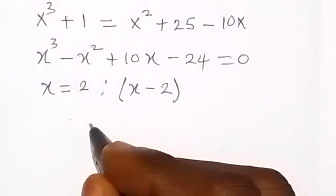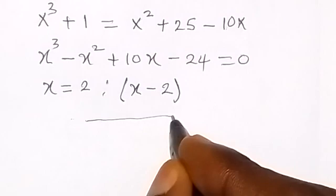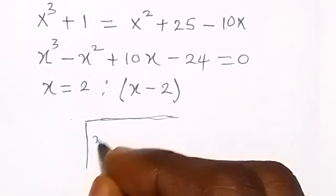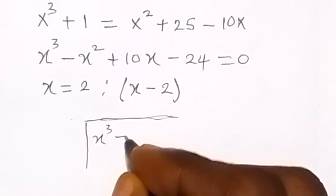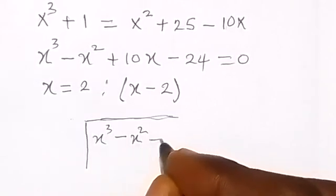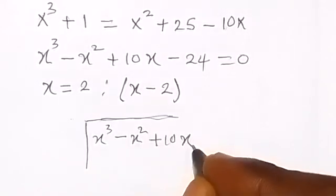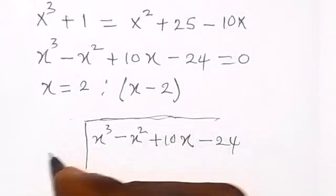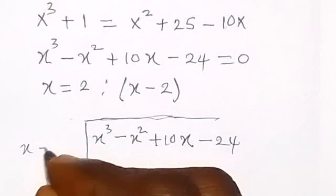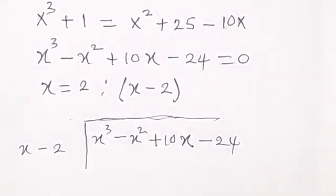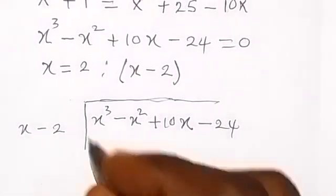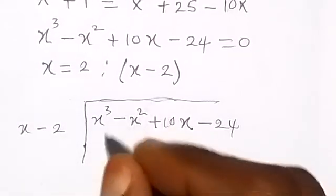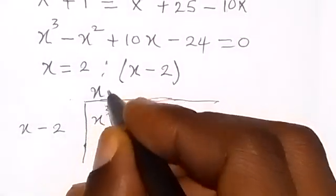When we divide the polynomial by the factor we know, we have the polynomial x cubed minus x squared plus 10x minus 24, and we want to divide it by x minus 2. From the division, x goes into x cubed giving x squared.